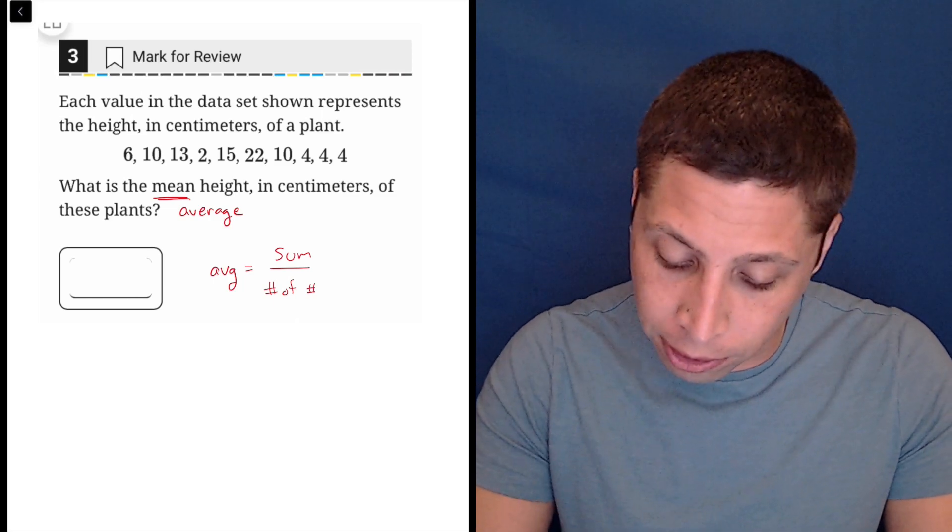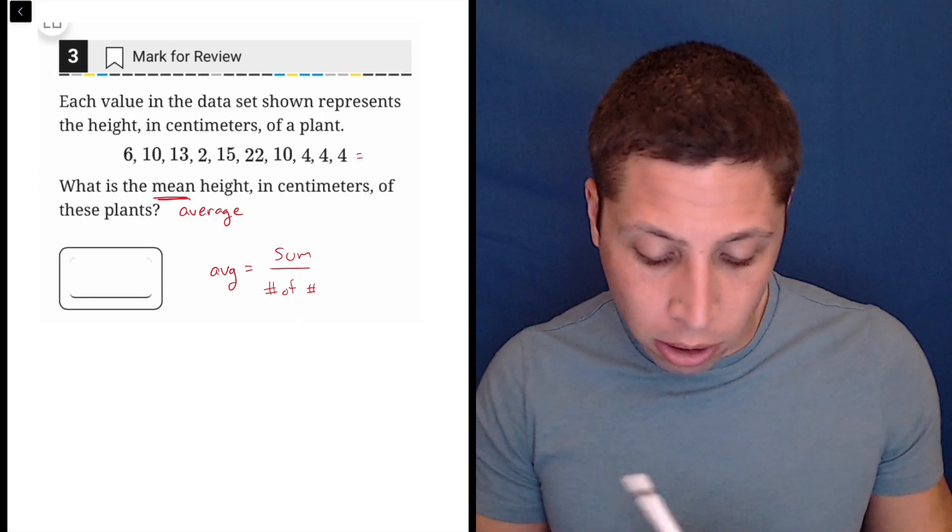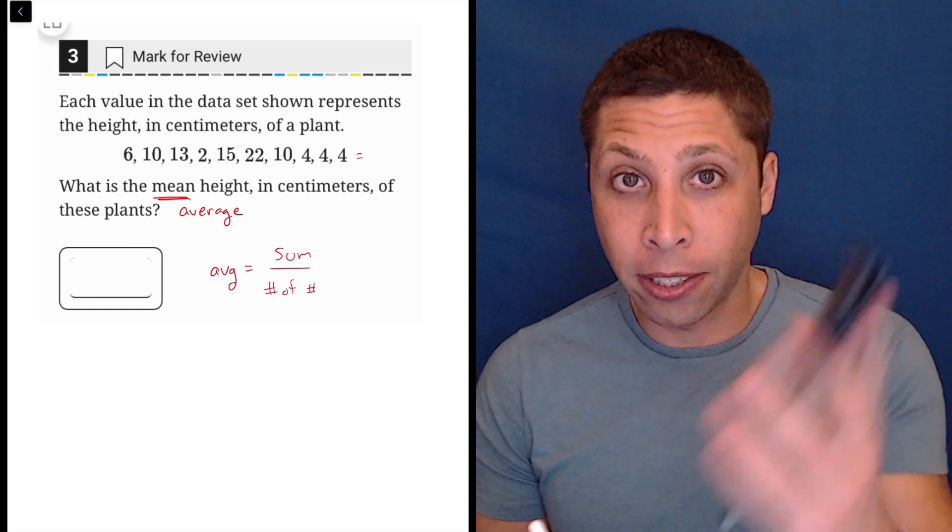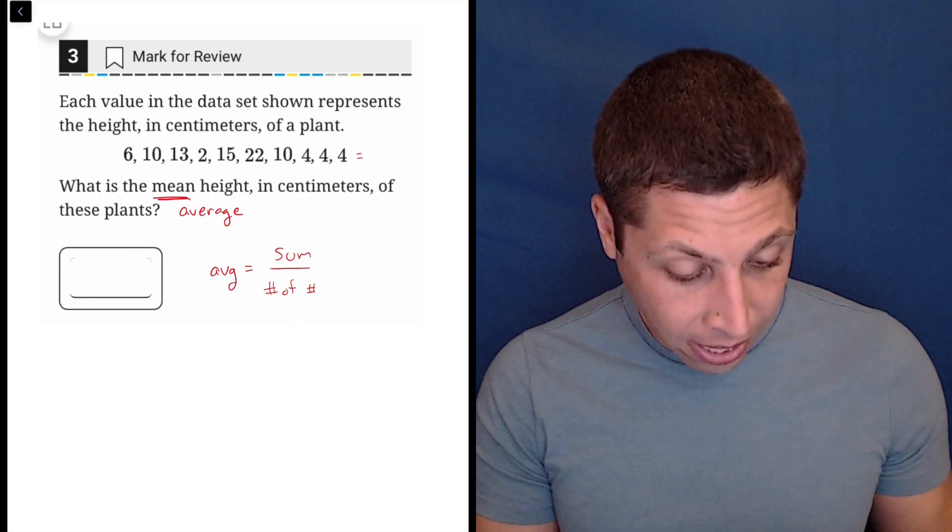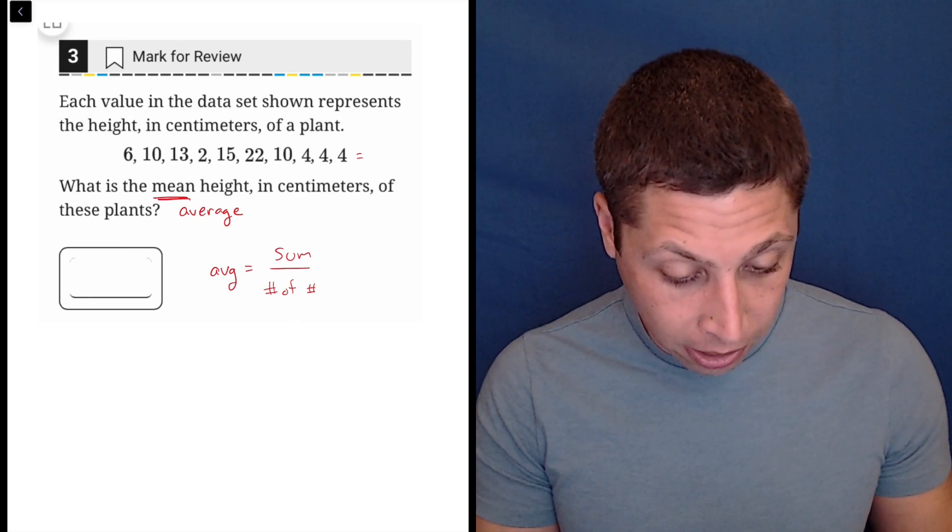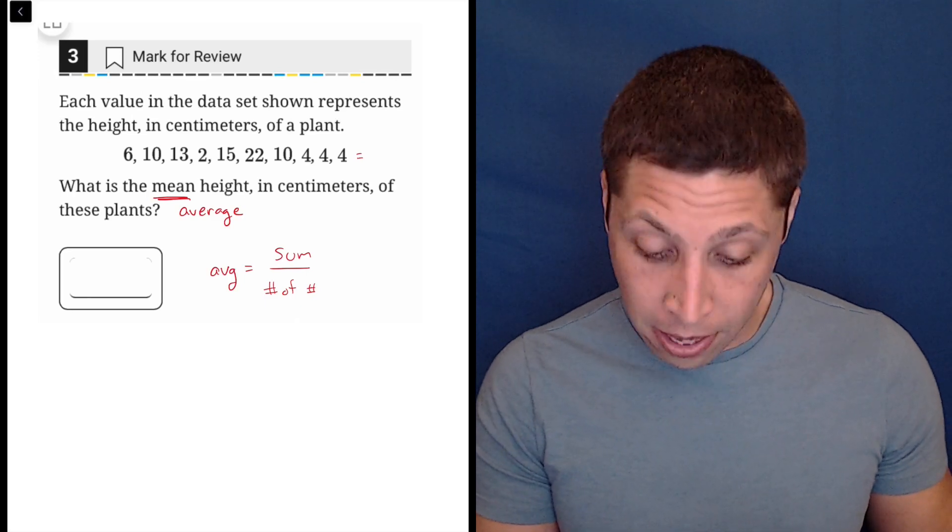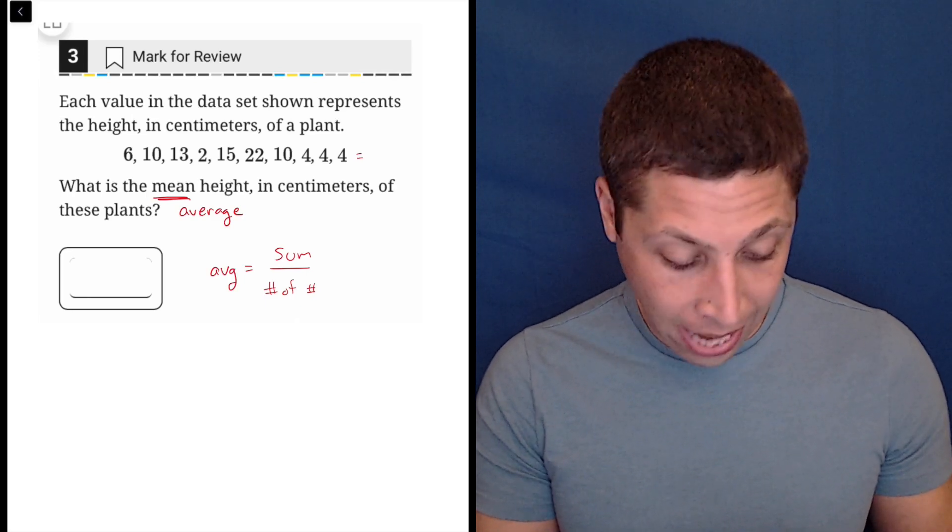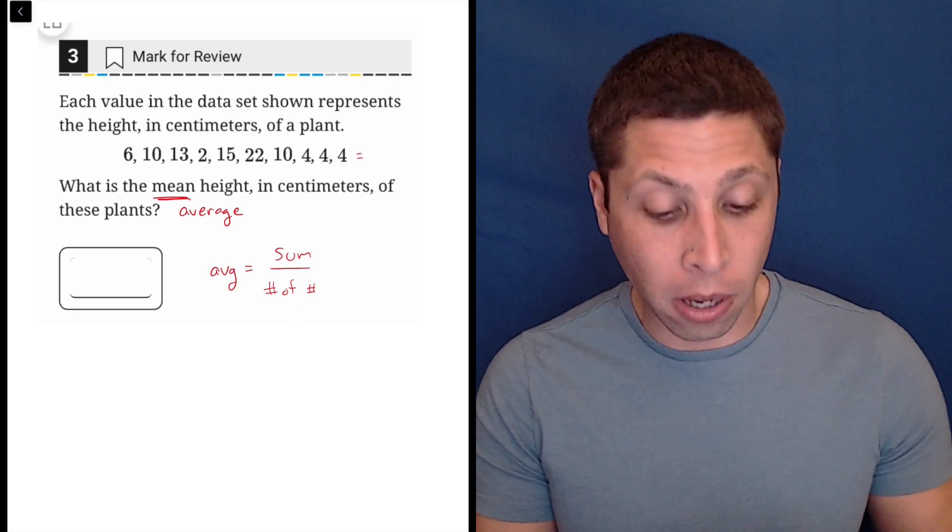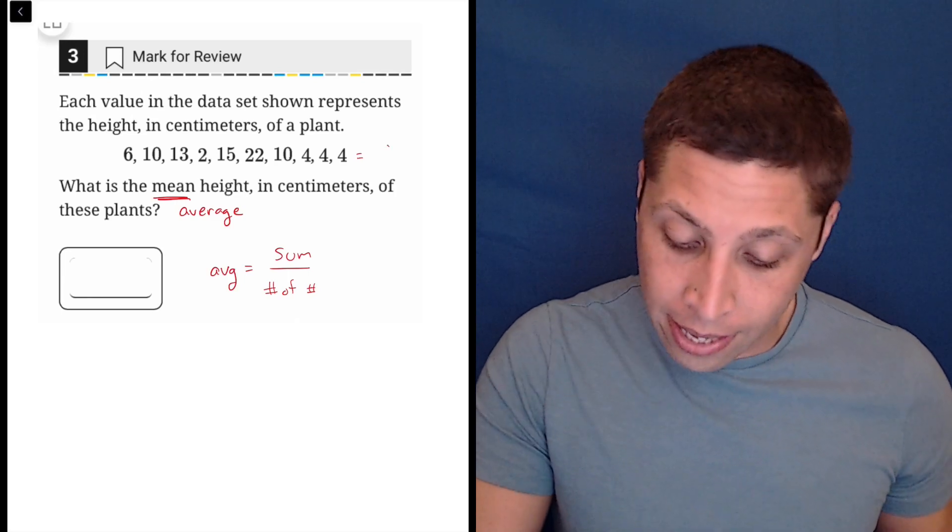So I just used my standard calculator for this, let's start by adding all of these up. So normal calculator, 6 plus 10 plus 13 plus 2 plus 15 plus 22 plus 10 plus 4 plus 4 plus 4 is 90.